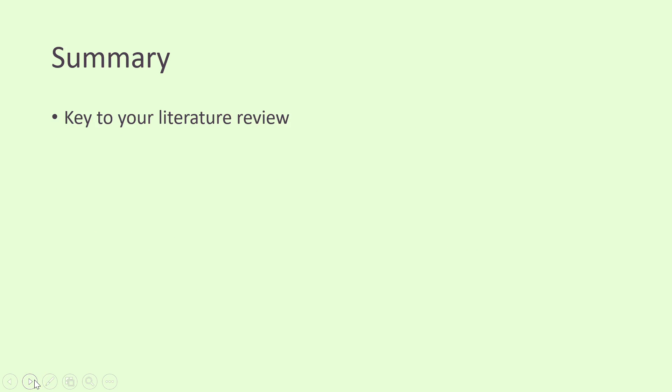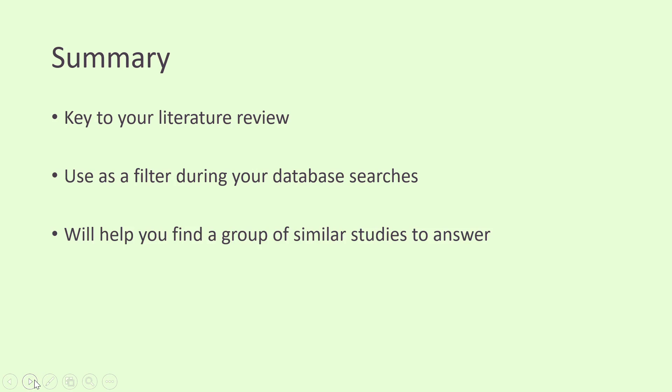So in summary, inclusion and exclusion criteria are key to your literature review. If you can define them and nail them down, they will help you sort and refine your literature. You want to use them as a filter during your database searches, and this will mean that you can find a group of similar studies that will help you answer your research question.